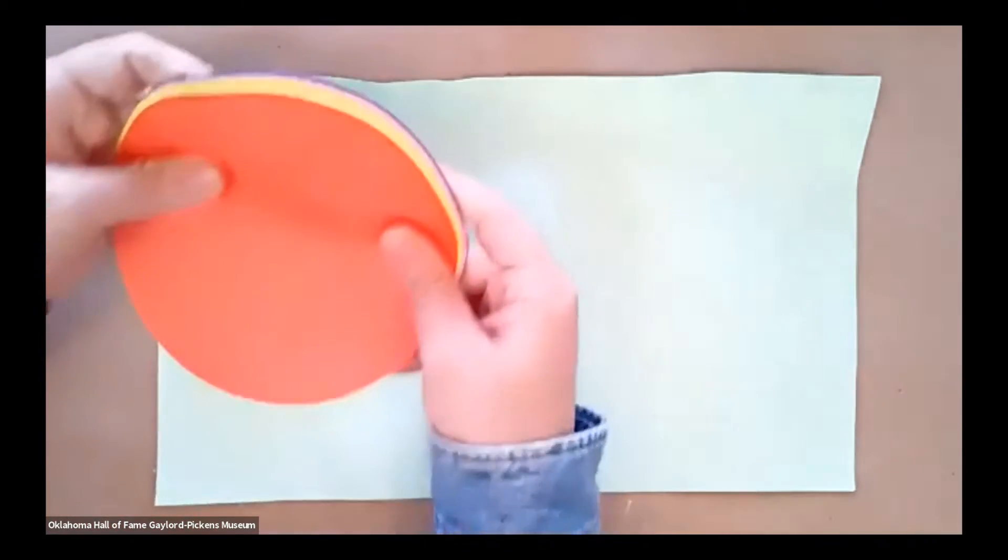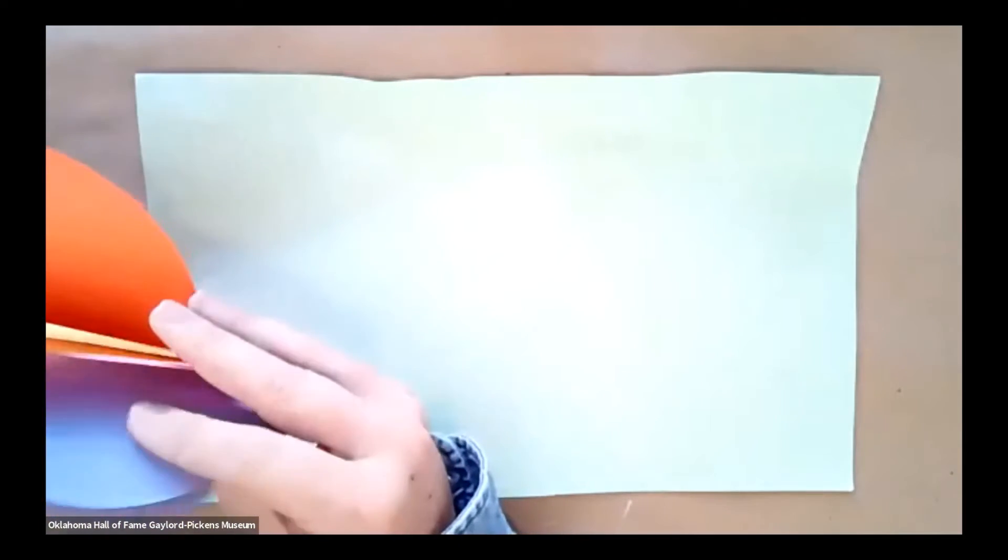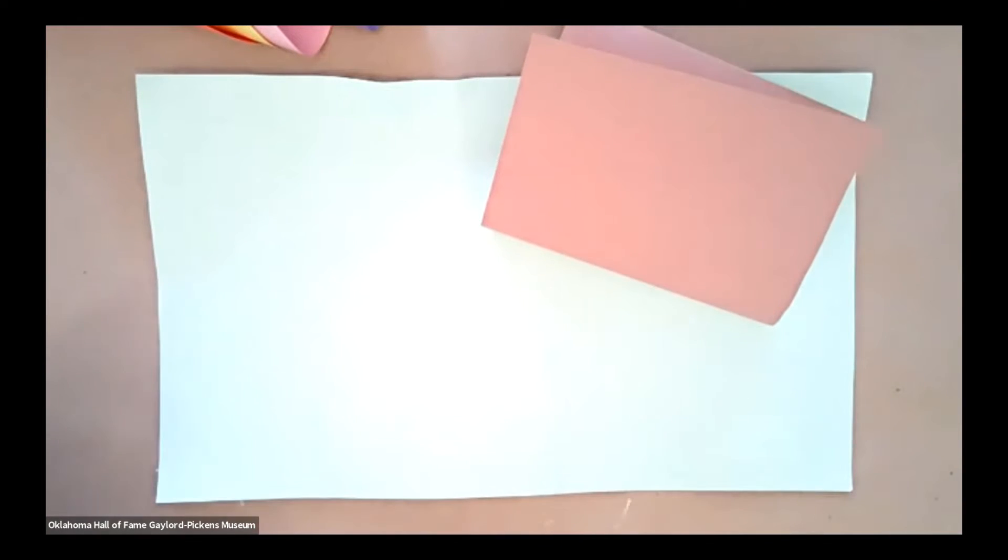So we're going to need one piece of construction paper. That's going to be our sky. And then we're going to need five paper circles, different colors. I only have four, so we're going to do four today. But you can do it with as many as you want or as few as you want. We're going to need a brown piece of paper for our hot air balloons basket. We're going to need a white crayon or some kind of crayon to draw some clouds. And then we're going to need a piece of yarn.